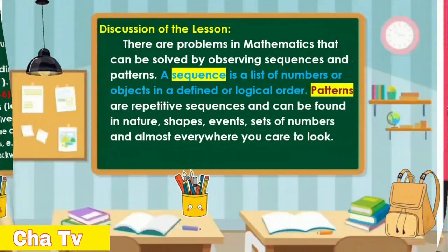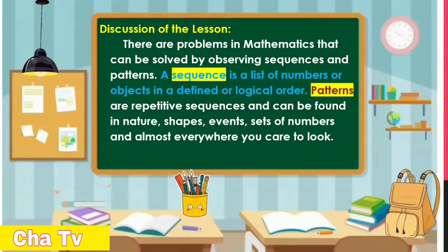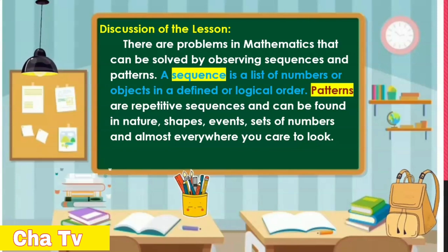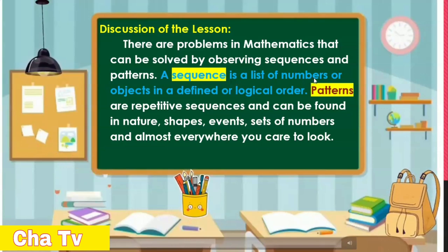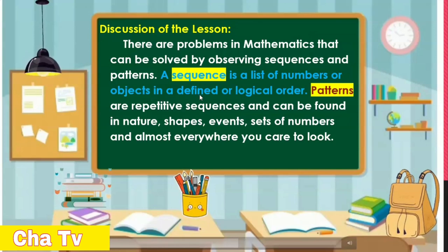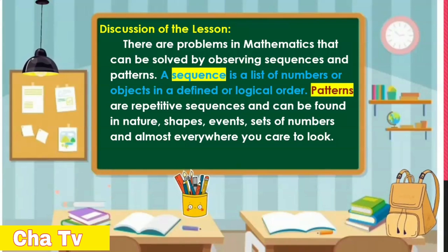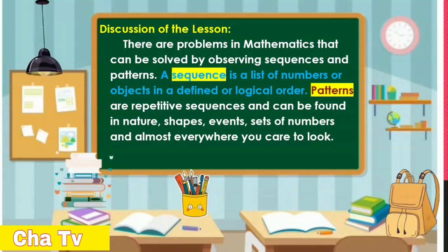There are problems in mathematics that can be solved by observing sequences and patterns. A sequence is a list of numbers or objects in a defined or logical order. Patterns are repetitive sequences and can be found in nature, shapes, events, sets of numbers, and almost everywhere you care to look.